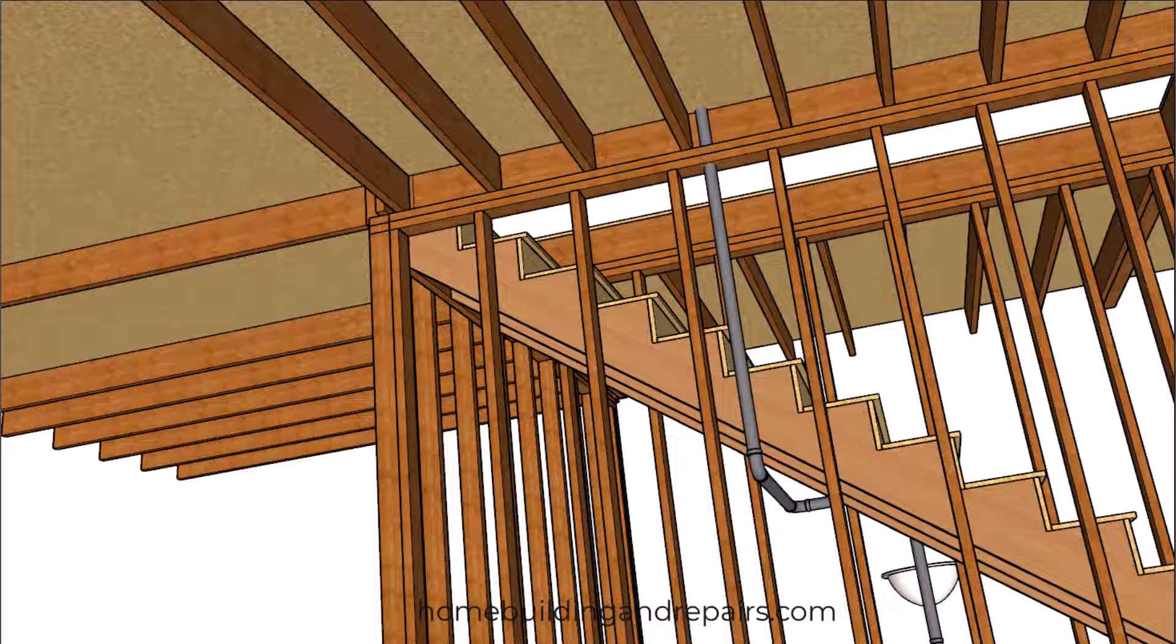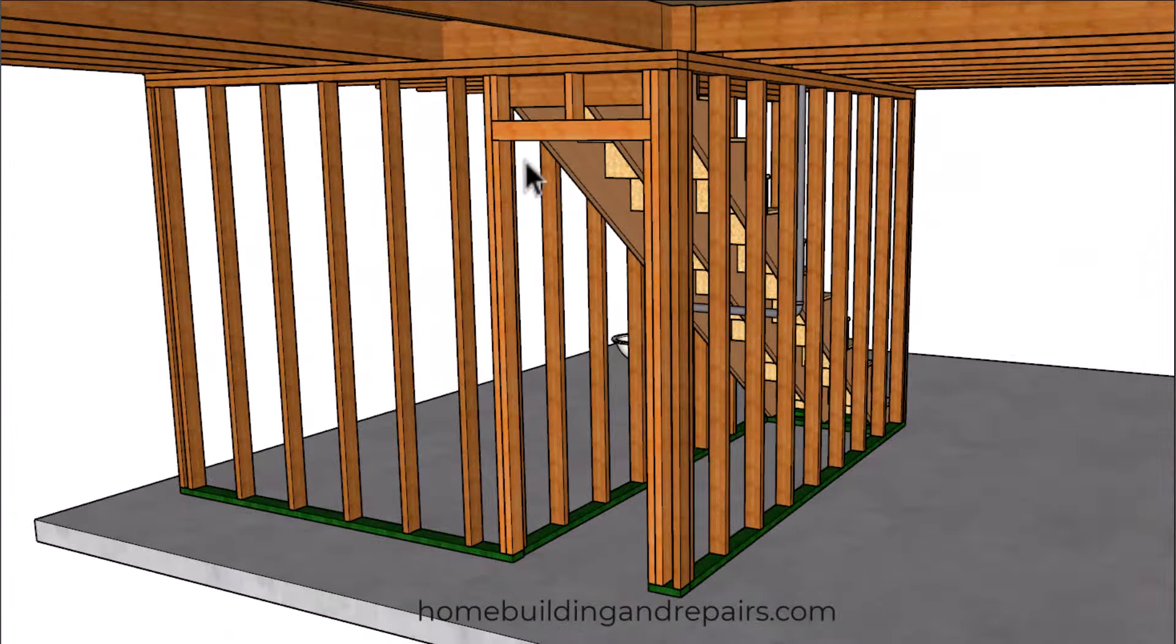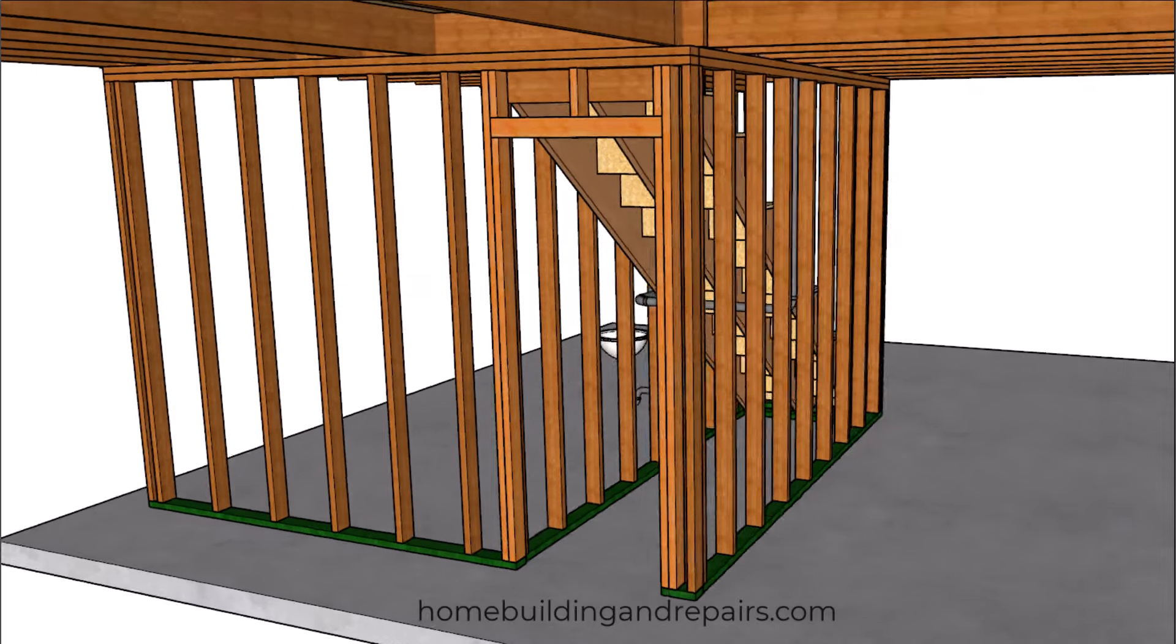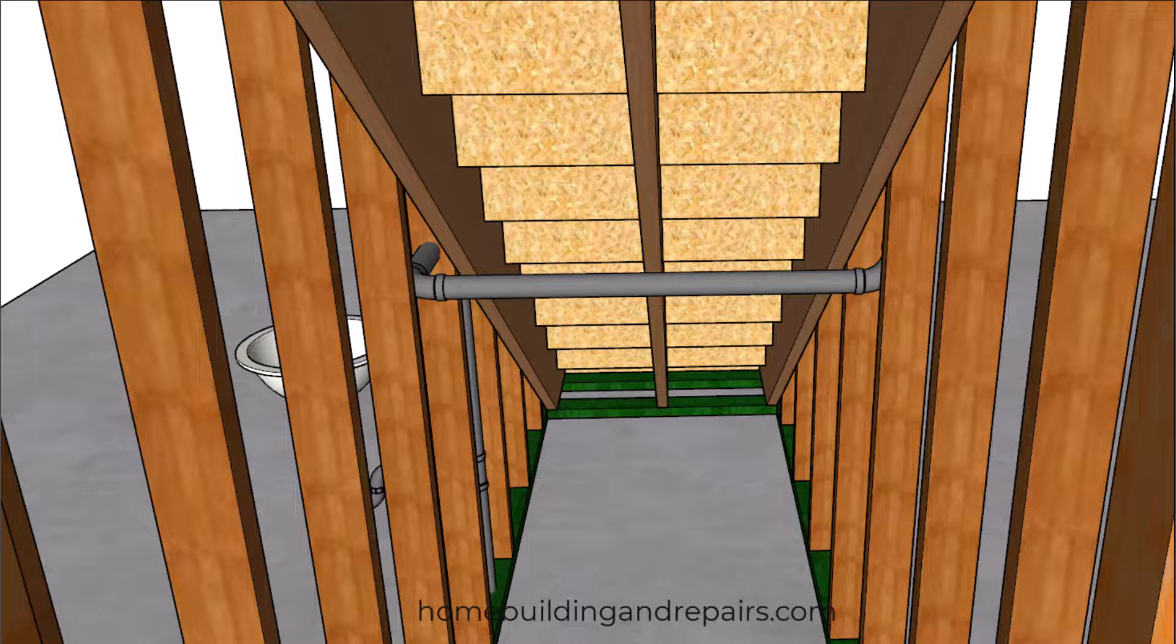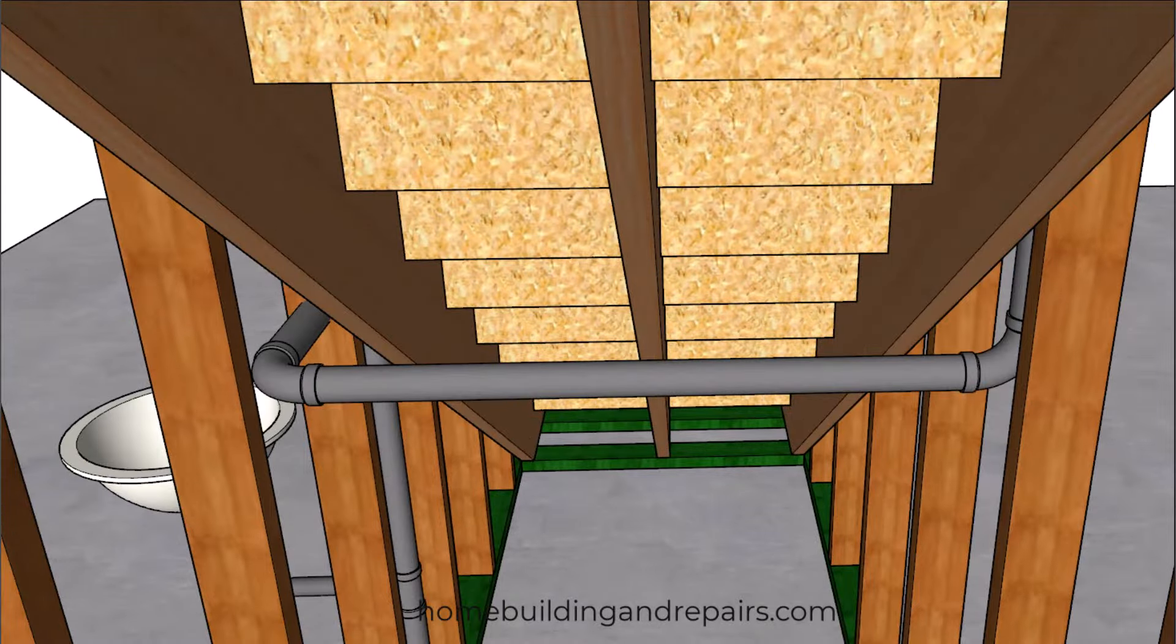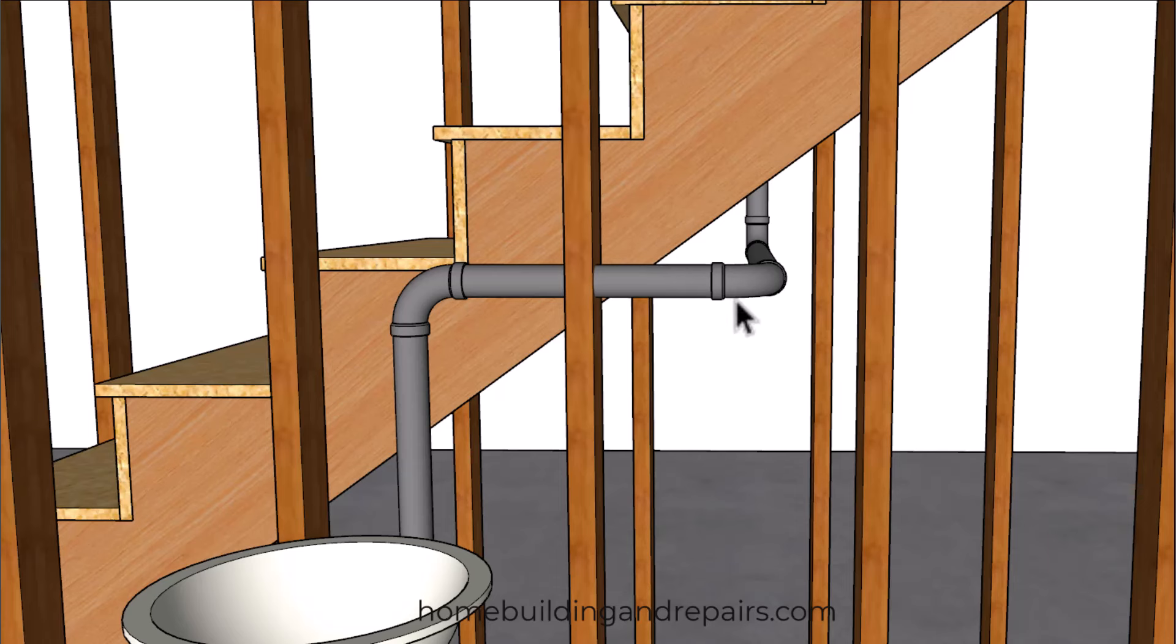However today most people want to install a closet. So let's go ahead and install our door here and then take a look at the exact location of that plumbing pipe and see if we can't move it to a better spot to make drywalling the ceiling in our closet a little easier.